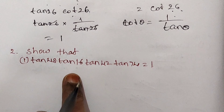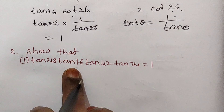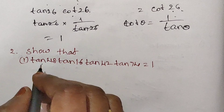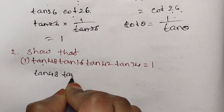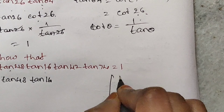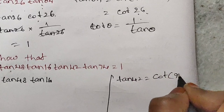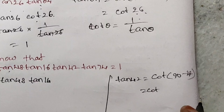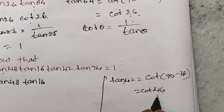Show that tan 45 into tan 16 into tan 48 into tan 42 into tan 74 is equal to 1. Write tan 45, tan 48, and tan 16 as they are. Tan 42 can be written as cot(90 minus 42), which is cot 48. Tan 74 can be written as cot(90 minus 74), which is cot 16. So tan 42 equals cot 48 and tan 74 equals cot 16.